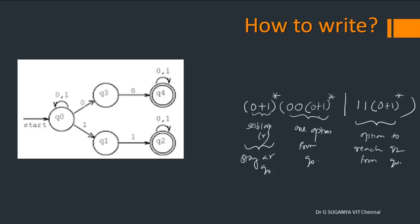So, this subset is for staying at Q0. This subset is to reach Q4. This subset is to reach Q2. That's all. This is the regular expression.